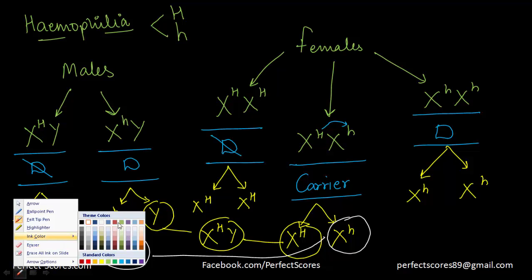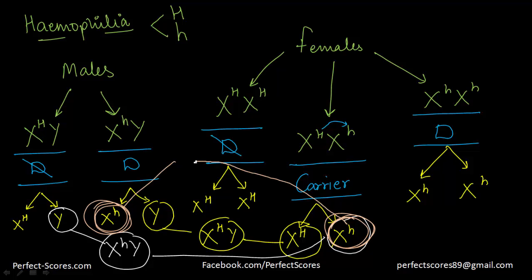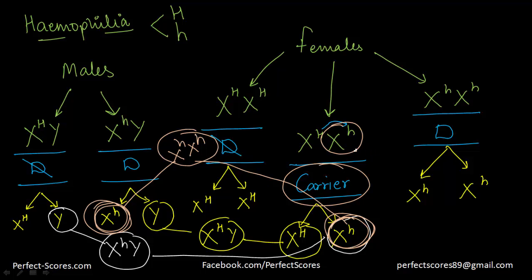Let me try out one more combination. Suppose fertilization takes place between this particular allele and this particular recessive allele — their offspring is going to be homozygous recessive, meaning a female child who will have the disease. So you can see that this person who is the carrier is not suffering from the disease herself, but she has the ability to pass it on to her children through the recessive allele. That is how the person is known as a carrier.